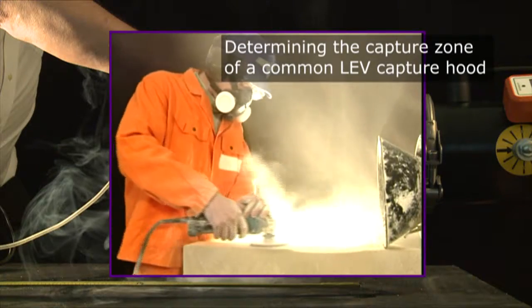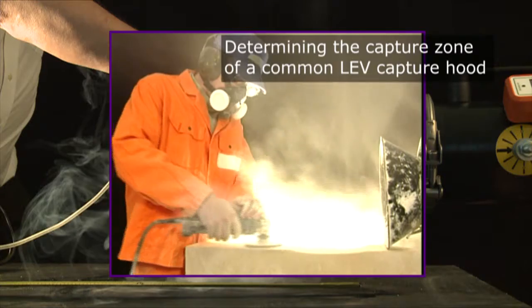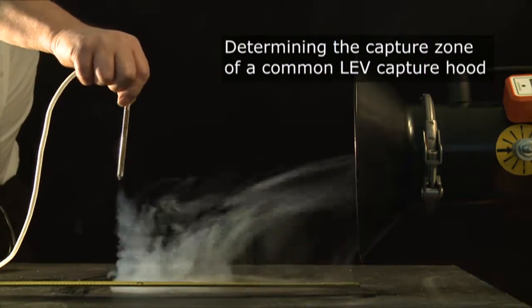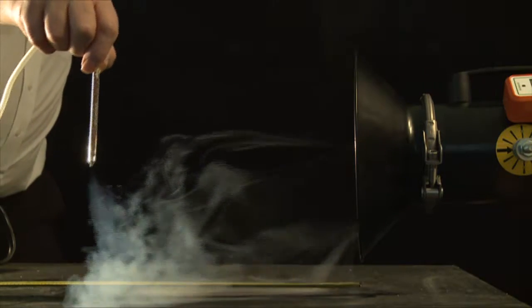Ideally, we should determine the capture zone with the process running. In this demonstration, we're using smoke to represent the contaminant generated by the process.